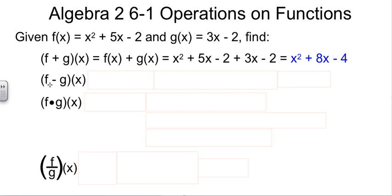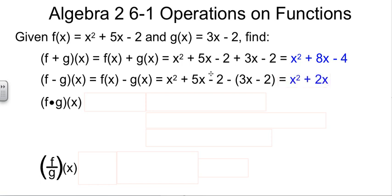If they ask us to do f minus g of x, that would be f of x minus g of x. f of x plugged in minus the g of x. Notice the parentheses so that I remember that the subtraction applies to everything. Now just collect: x squared, 5x minus 3x is 2x, negative 2 minus negative 2 cancels out.